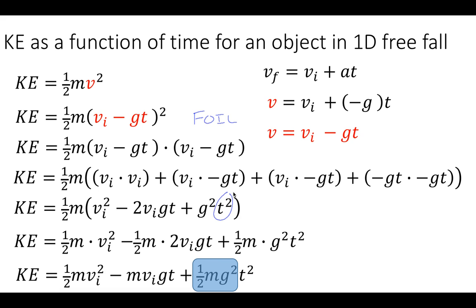The coefficient of t squared is what we refer to as a. The coefficient of the first order t is what we refer to as b.